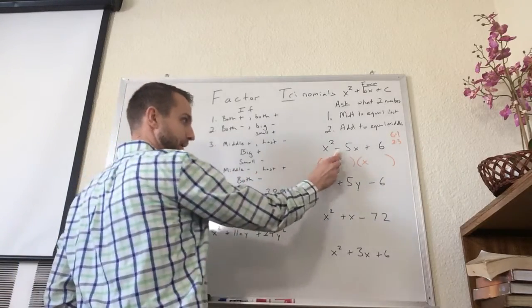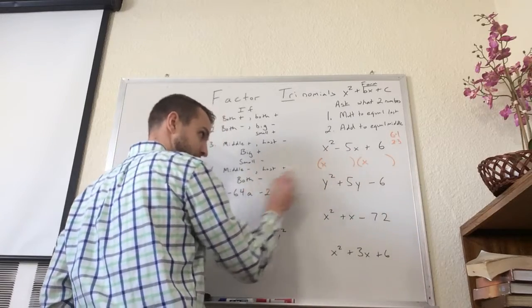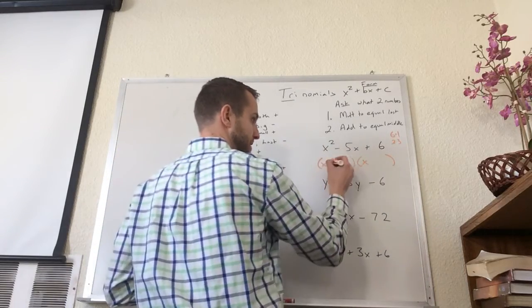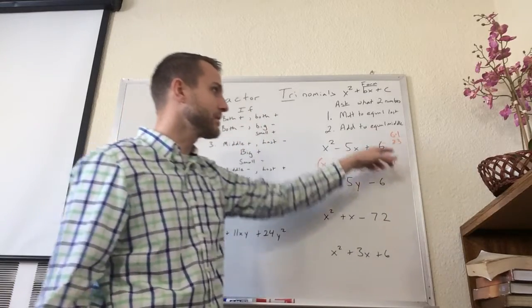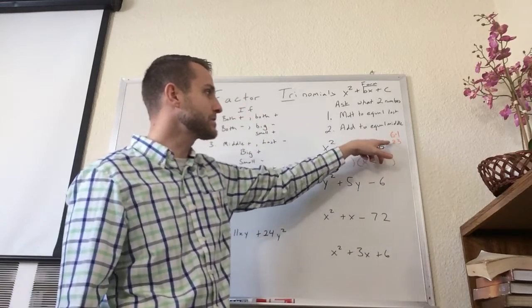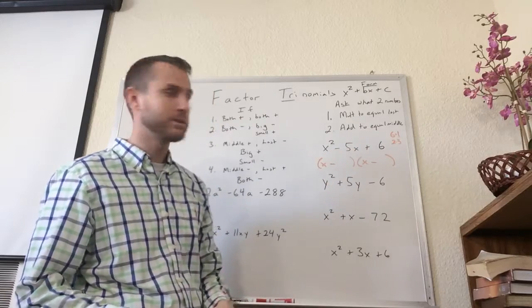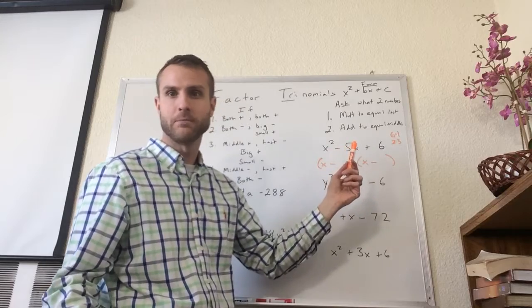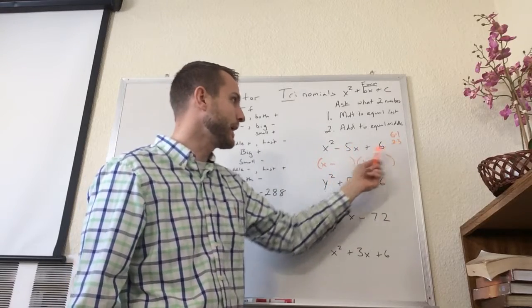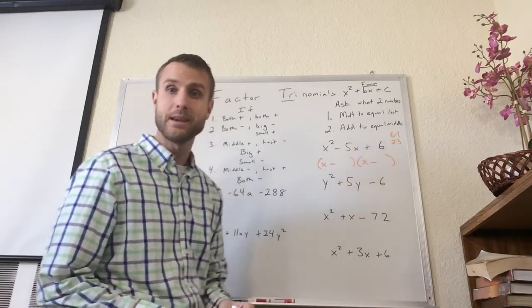So since my middle is negative and my last is positive, I know both of the terms inside are going to be negative. So if both of these are negative, of these two, which ones are going to add up to equal negative 5? Does negative 6 and negative 1 add up to equal negative 5? No. Does negative 2 and negative 3 add up to negative 5? Yes.